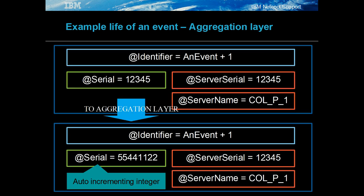The collection to aggregation gateway forwards the event to the aggregation layer as a new insert. If the event does not already exist, it is assigned a serial value for the object server agp. In this example, serial is set to 55441122. The ag_new_row trigger preserves the server name and server serial, so that together they uniquely define the event for the gateways.